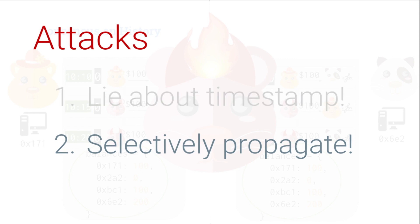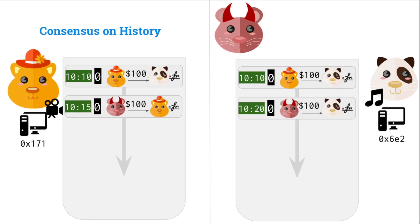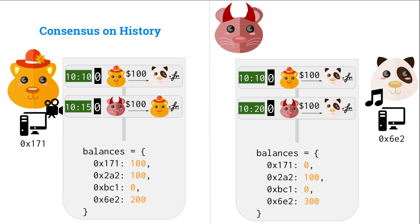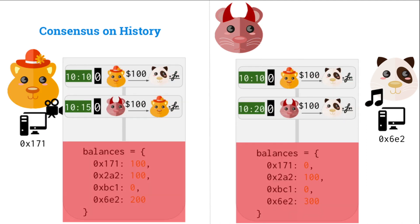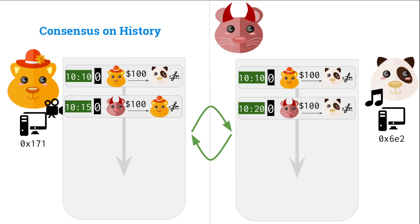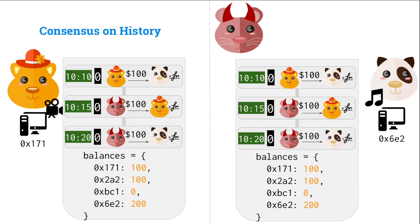The second problem is Mallory can selectively propagate these messages. Mallory generates those two double-spend transactions as before and selectively propagates them. When we output the state, of course we come up with different balances because they don't have a complete view of each other's transactions. Alice thinks the only transaction was the 10:15 one, while Jing thinks the only transaction is the 10:20 one. They're out of sync because their histories are different, so their state is going to be different too.